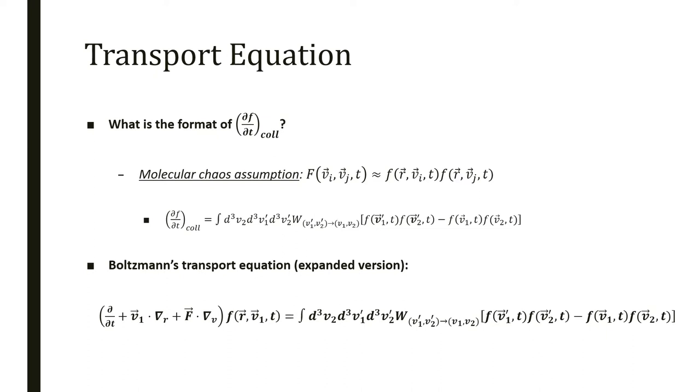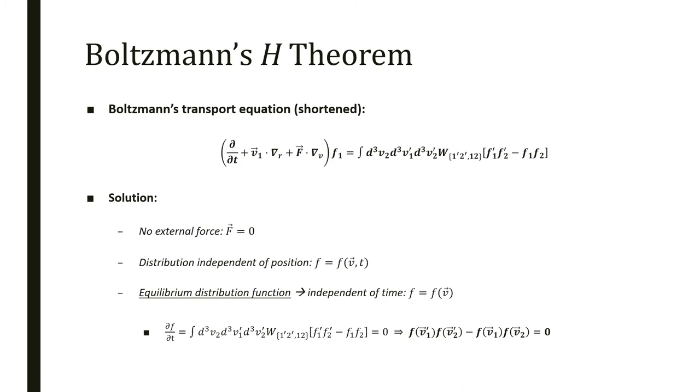I'm going to write it in a shorter form now, using the arguments directly on the function, so f of v1' will be just f1'. To solve it, Boltzmann is dealing with a rarefied gas in volume V. We don't have an external force and can assume the distribution is independent of position, so it's just a distribution of velocity and time. We can define the equilibrium distribution function as independent of time, dependent only on velocity. When we plug it back into the equation, we find that a sufficient condition is this relation between the cross-correlation functions equals zero.